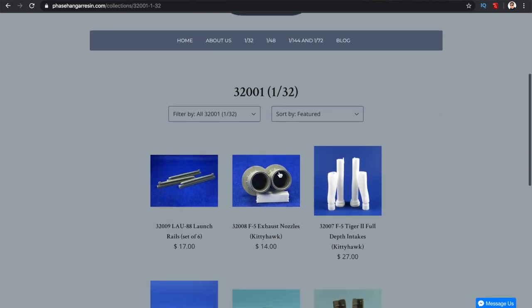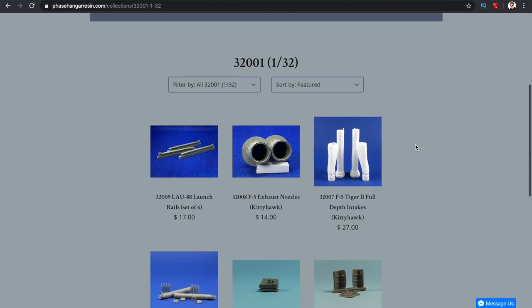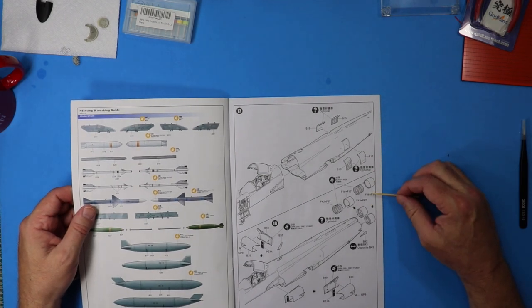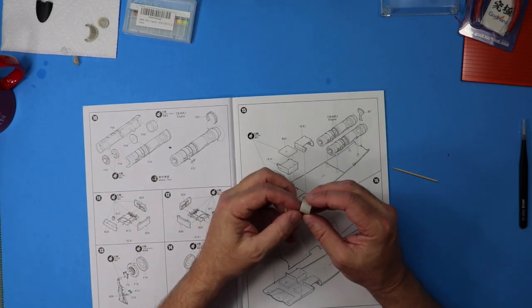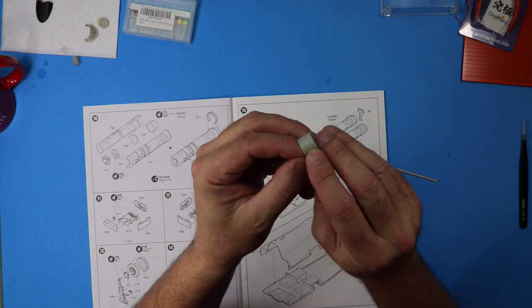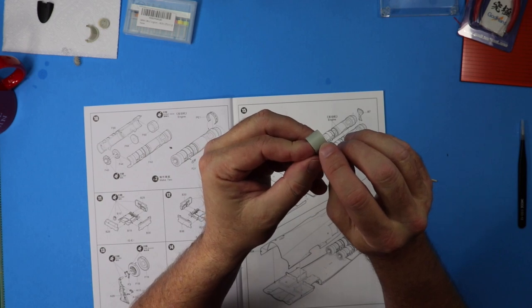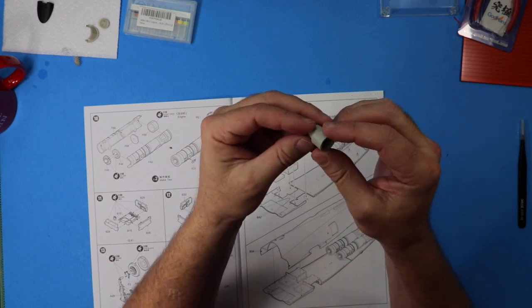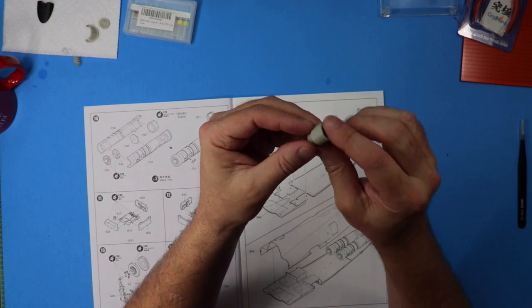Now the exhaust itself is actually made up of two pieces. Back here you'll look on step 18 - when you put them together you have a pretty pronounced seam right across here and right across here. I was able to clean these up and redrill rivets and stuff, but once I started fitting this together it just really looks kind of iffy. So I went ahead and bought the single piece seamless resin piece from Phase Hanger as well, and I'm waiting for those pieces to come in.